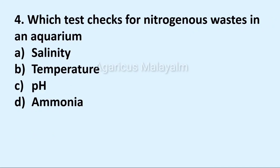Fourth question: Which test checks for nitrogenous waste in an aquarium? Answer options: Option A Salinity, Option B Temperature, Option C pH, Option D Ammonia. Correct answer: Option D Ammonia.